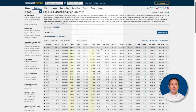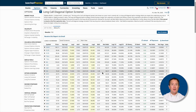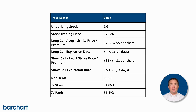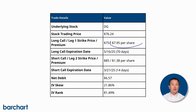Let's have a look at these results — you can pick any you like. For the purposes of this video, let's pick apart this trade on Dollar General. According to the screener, you can buy a long call diagonal spread on Dollar General stock, which at the time of recording is trading at $76.24. The strike for the long call is $75, which makes it in the money, and you'll pay $7.95.